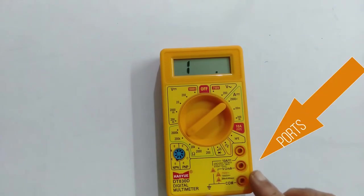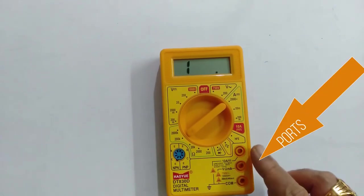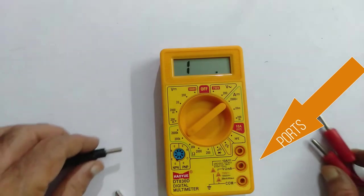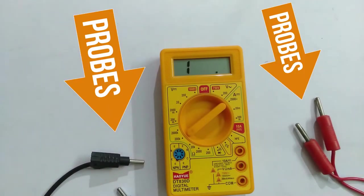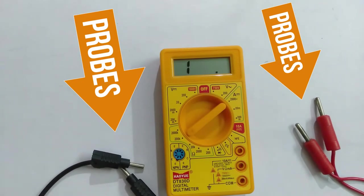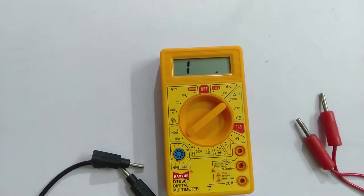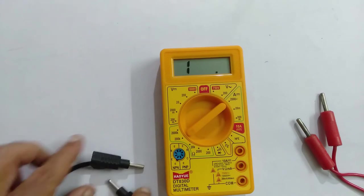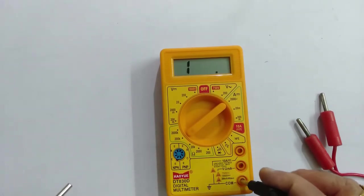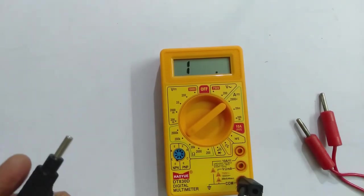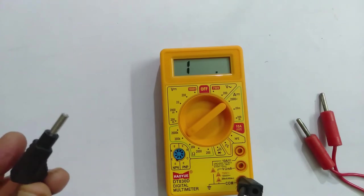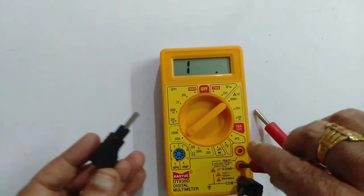These three are known as ports and you will be given two probes. This last one is known as common which is connected to the ground. The other probe is to be inserted here. Normally, we keep this with negative, with black, and then this other with red.